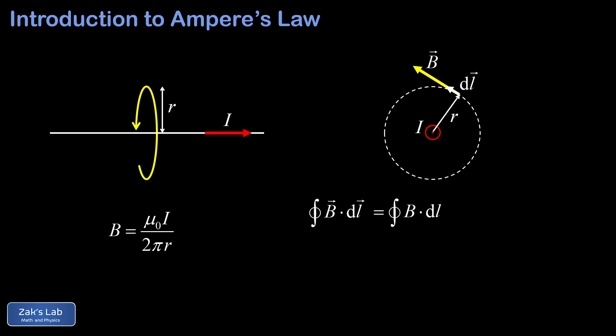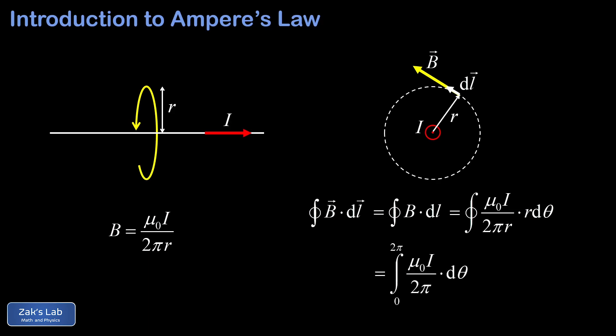We start with the integral of B dotted into dL, adding up all the B field in the direction of dL around the entire closed loop. This is a special case where B always points exactly in the direction of dL, so the dot product is trivial and we replace it with the magnitude of B times the magnitude of dL. We substitute mu-naught i over 2 pi r for B, and R d-theta for dL. The R's cancel out, leaving a pure theta integral from 0 to 2 pi, which gives a factor of 2 pi, and with the 2 pi's canceling, the path integral gives us mu-naught times i.